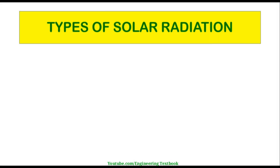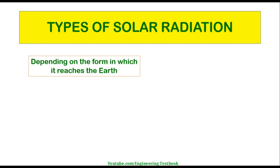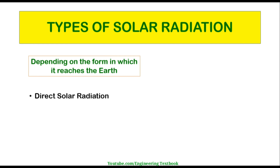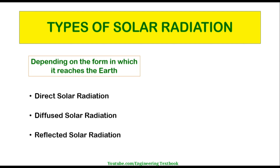Depending on the form in which it reaches the earth's surface, there are three types of solar radiation: direct solar radiation, diffused solar radiation, and reflected solar radiation.